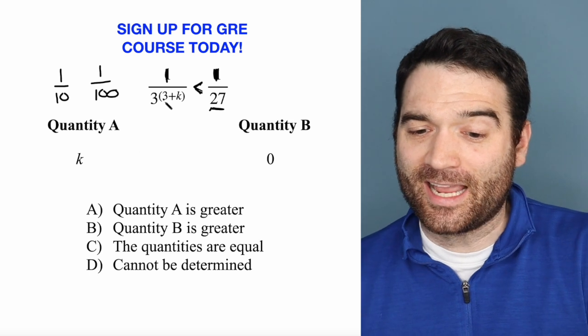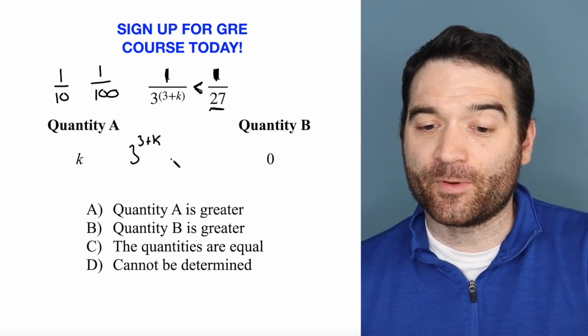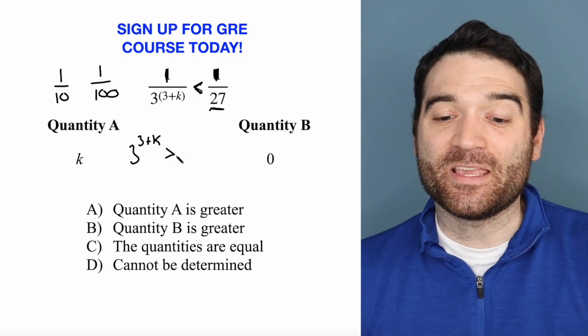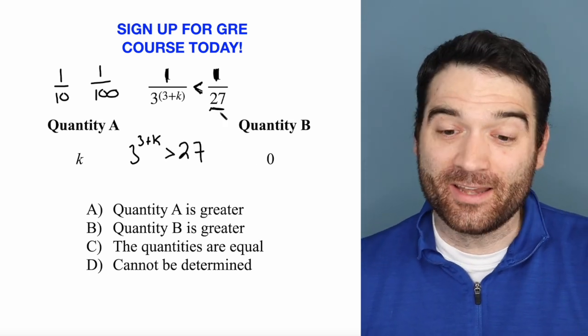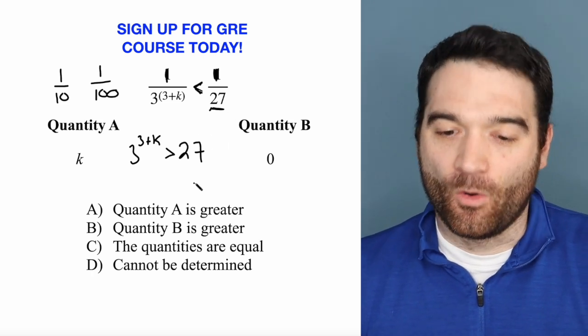So if I want to, I can kind of rewrite this, what I know. 3 to the power of 3 plus k has to be bigger than 27, right? Because I want to make this overall fraction bigger.